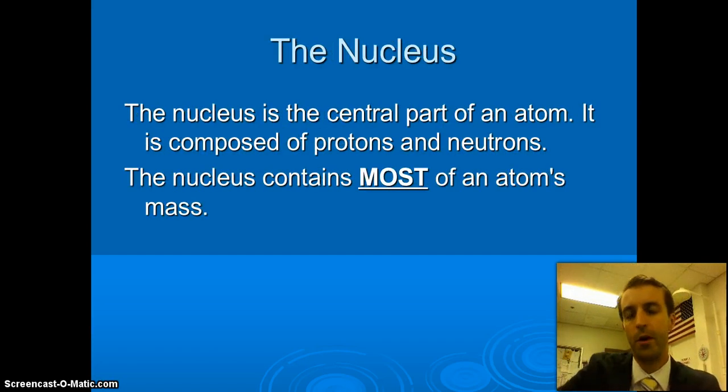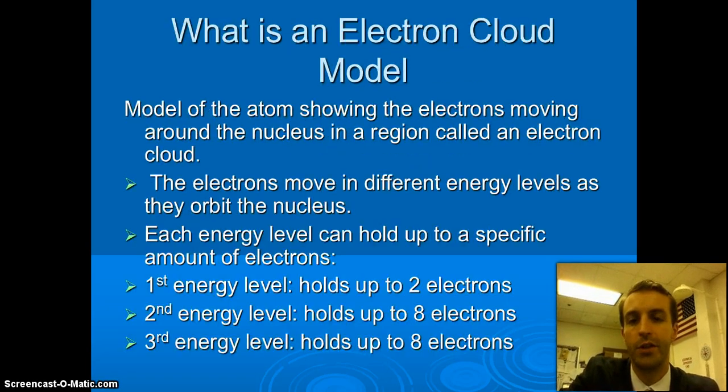The nucleus is your central part. It's made of protons and neutrons and it contains almost all of an atom's mass. Even though it is the smallest part of the atom, it has the mass. That's where you find all the stuff. The electrons, remember, don't weigh very much at all.